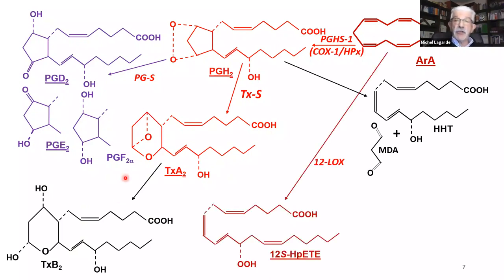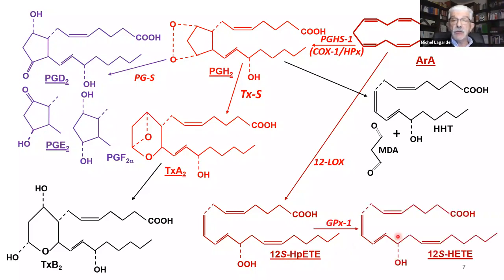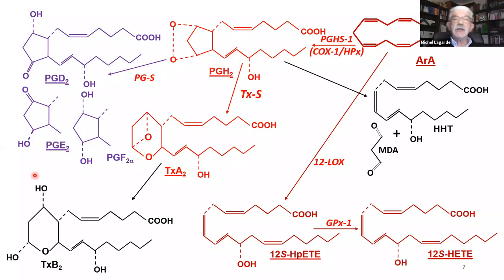A second pathway in platelets is the 12-lipoxygenase pathway, which specifically oxygenates carbon 12, leading to 12S-hydroperoxide. This is efficiently reduced by glutathione peroxidase into 12-HETE. This kind of metabolism must be considered within the context of the cell and its environment.